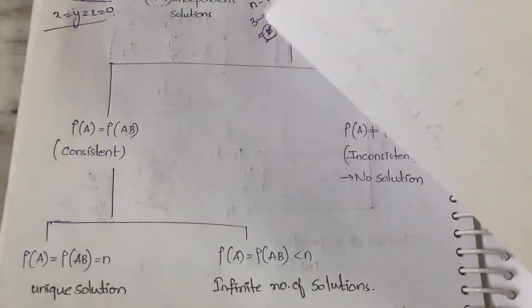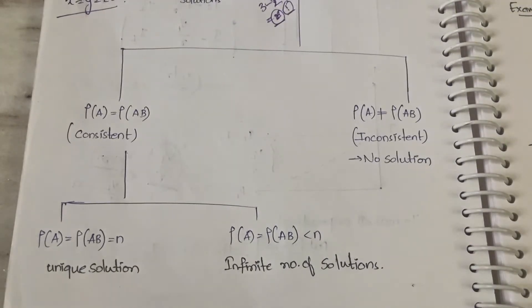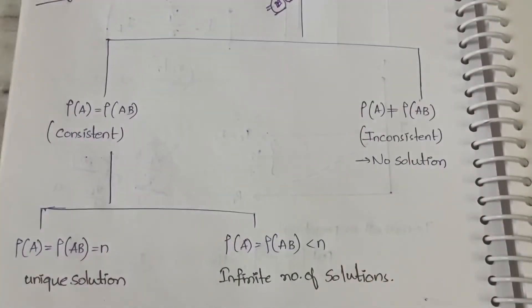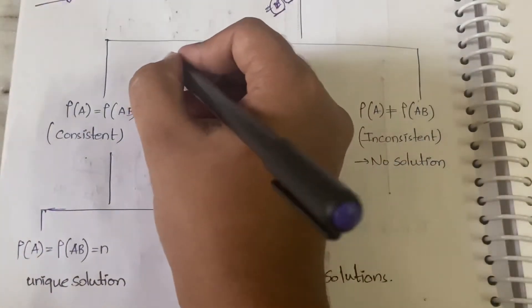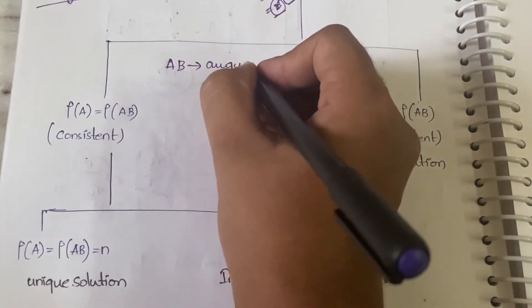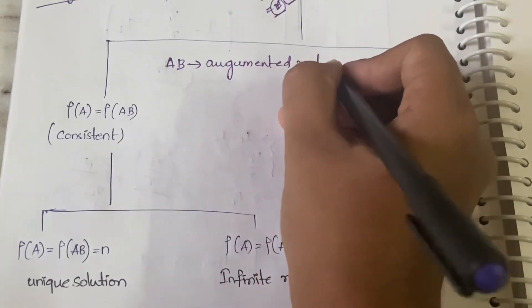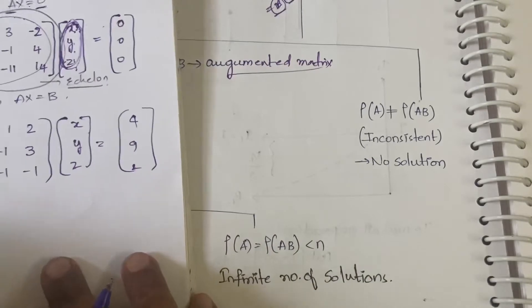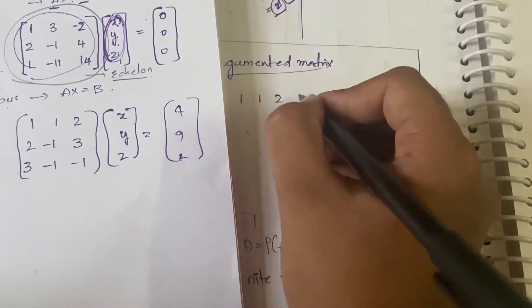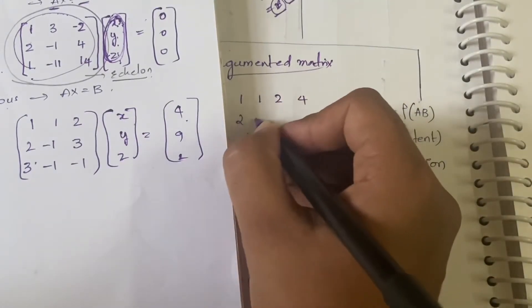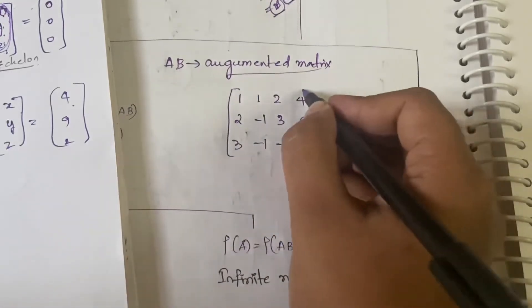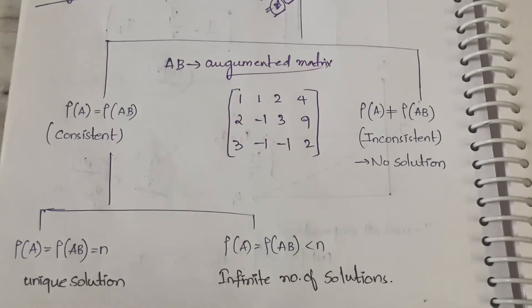Now let us see the classification of non-homogeneous. In non-homogeneous we have two categories based on rank of A versus rank of augmented matrix AB. The augmented matrix AB is formed by combining A and B together. For example: matrix A is 1,1,2 / 2,-1,3 / 3,-1,-1 combined with B as 4, 9, 2 — written together as one matrix. You then calculate the rank of this augmented matrix using echelon form.